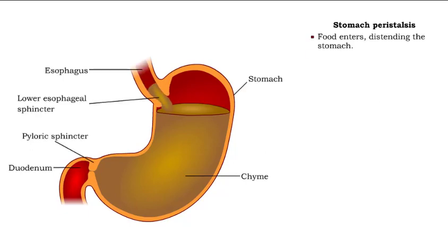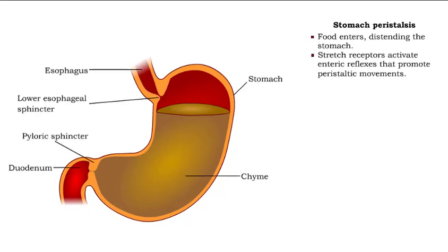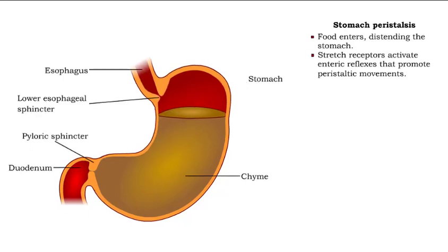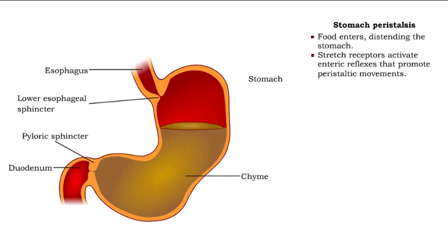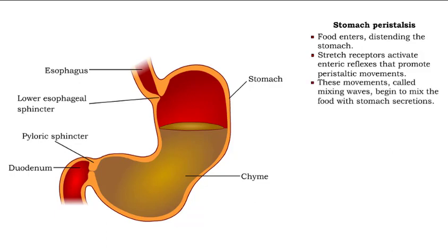As food enters and distends the stomach, stretch receptors activate enteric or local reflexes that promote peristaltic movements. These movements, called mixing waves, begin to mix the food with secretions of the stomach.